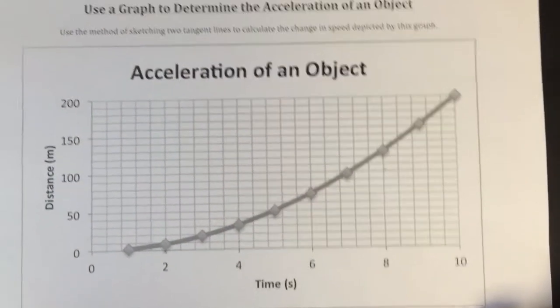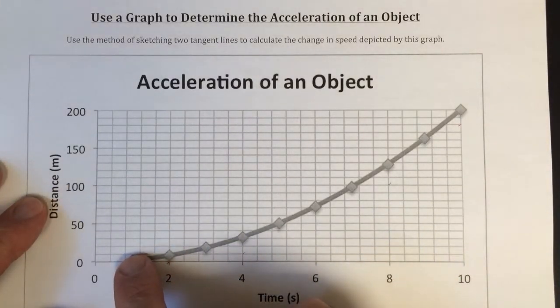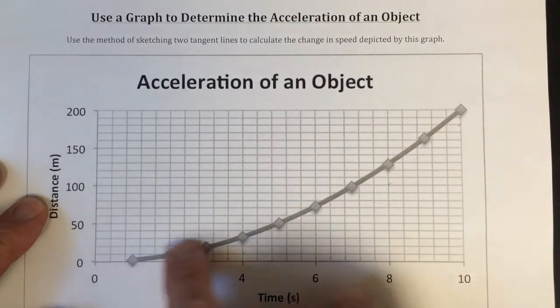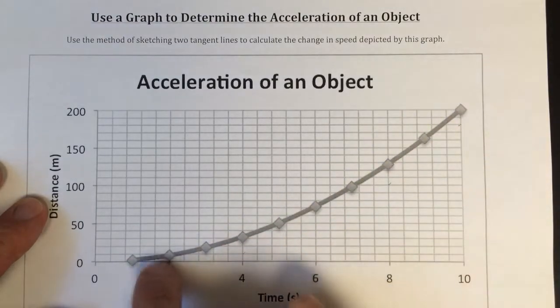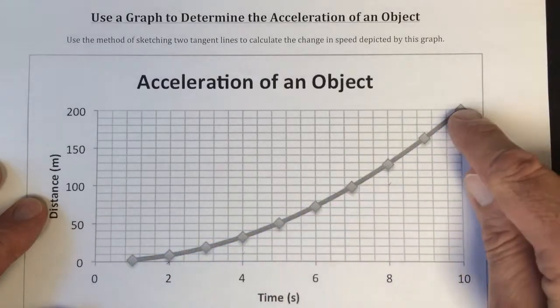So let's use this graph as an example. Here we have distance versus time. We see that the object is accelerating. We know that because there's a curve here and the slope of this line is increasing. So that tells us that the object must be speeding up.